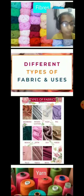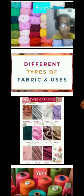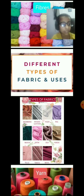Types of fabric: the various types of fabric which are commonly used by us are cotton fabric, woolen fabric, silk fabric, and synthetic fabric. We wear clothes made of cotton during the hot days of summer season, and woolen clothes are worn in cold days of winter.